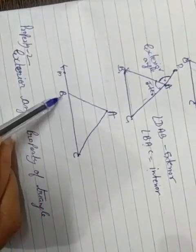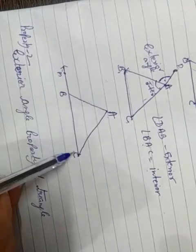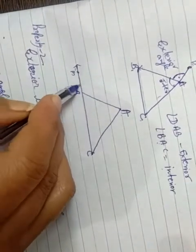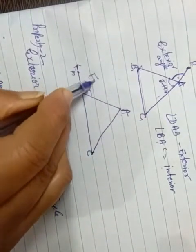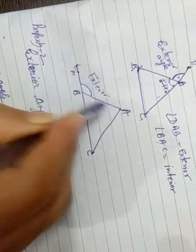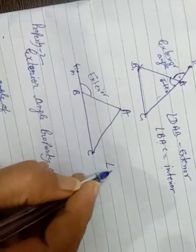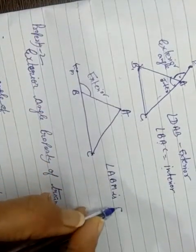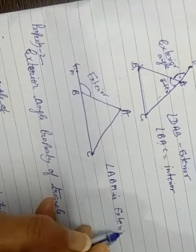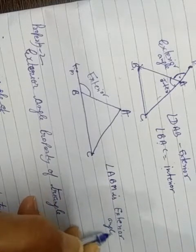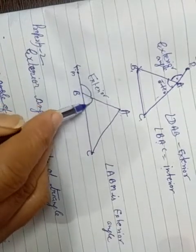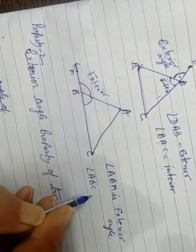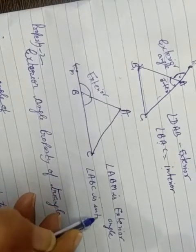If we extend BC to the left side, then you will see angle B. The exterior angle here is named ABM — angle ABM is the exterior angle. And if we take the inside part, ABC, then ABC is the interior angle.